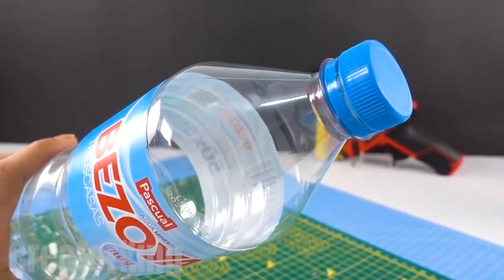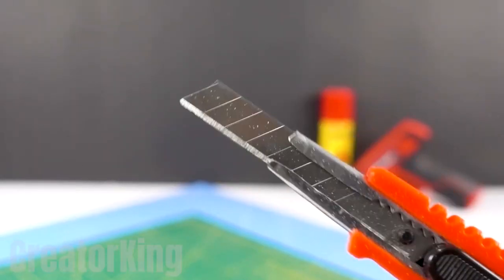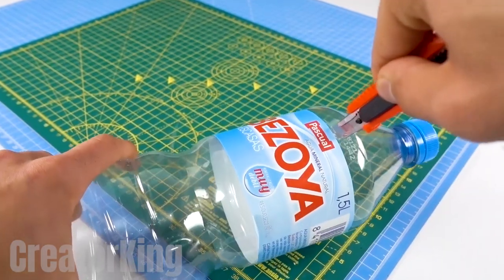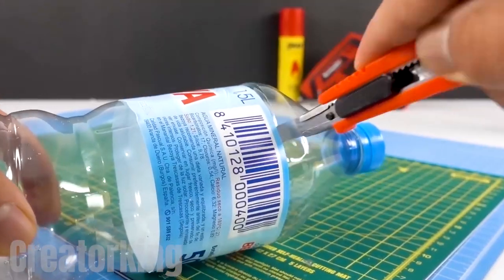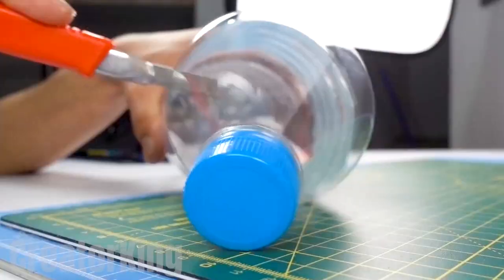Hi King Creator fans! For today's first invention, we'll need the top of a 2 liter water or coke bottle. With the help of the box cutter, cut it until it separates.